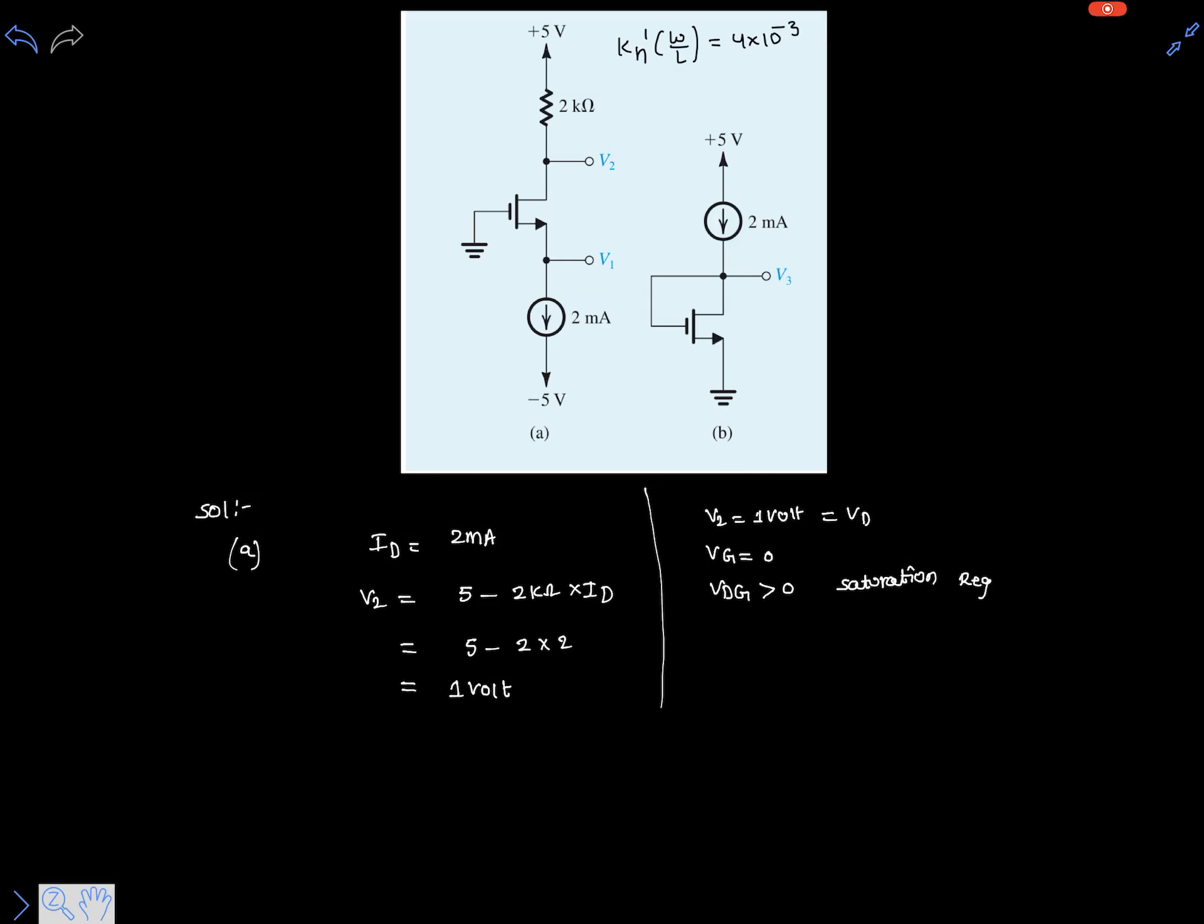The transistor is operating in saturation region, so now let's write the drain current equation. That is id equals half of k_n dash multiplied by w over l times (vgs minus vt) squared.